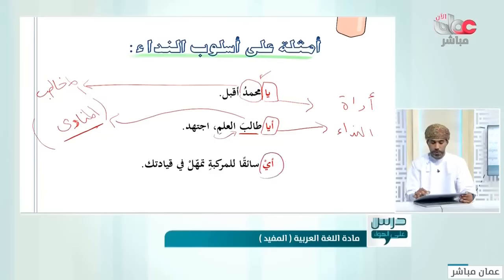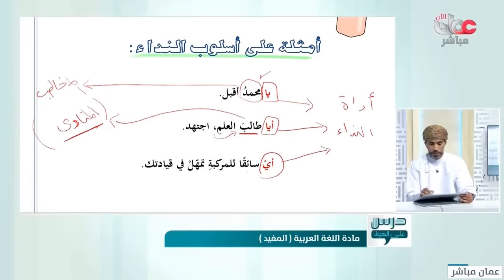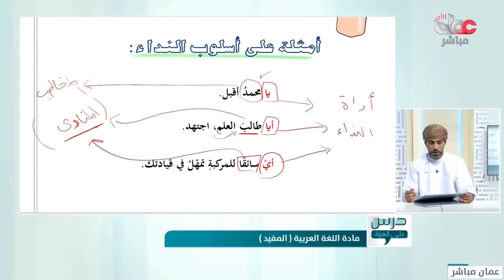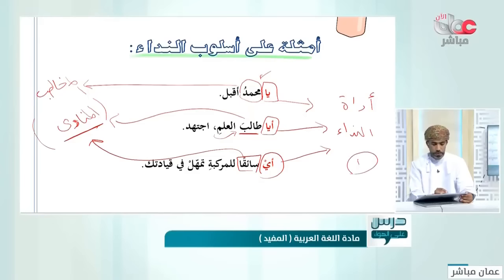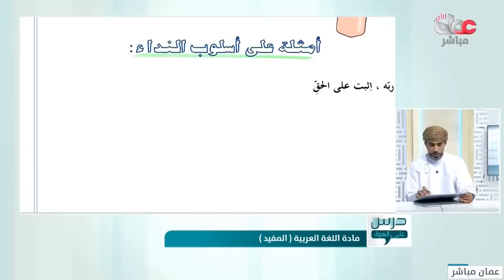مثال ثالث: أي سائقاً للمركبة تمهل في قيادتك. الأداة هنا 'أي' وسوف نستعرض بعد قليل ما معنى كل أداة ولمن تستخدم، للقريب أو البعيد. سائقاً هو المخاطب وهو المنادى في هذا المثال. تحقق الركنان من أسلوب النداء: أداة النداء والمنادى.